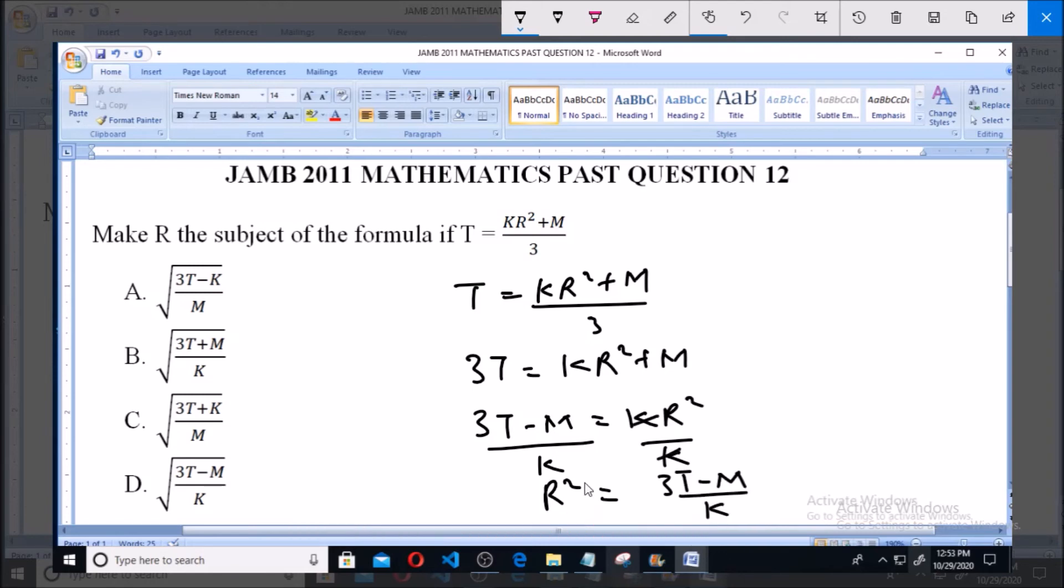Now since we have R squared equals 3T minus M over K, then we can see that R equals the square root of 3T minus M all over K, and that is option D.